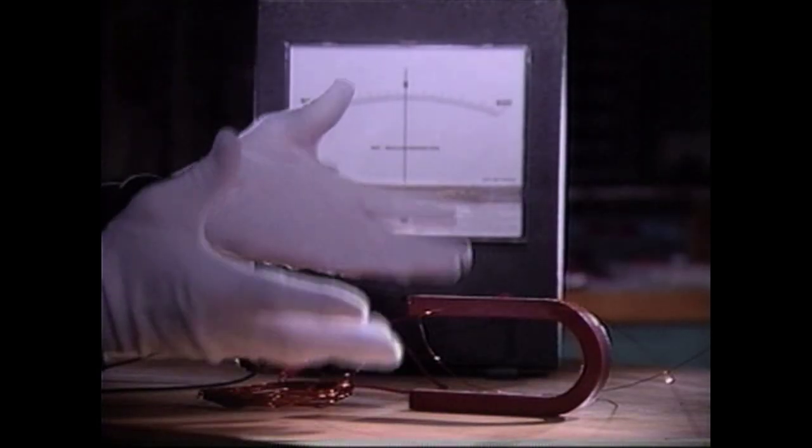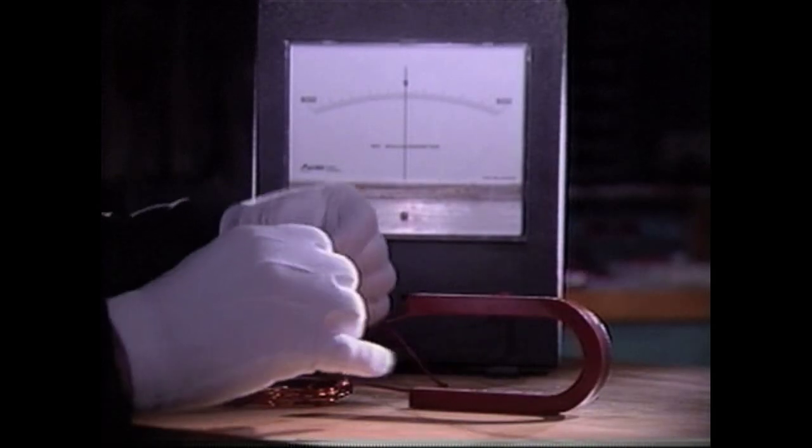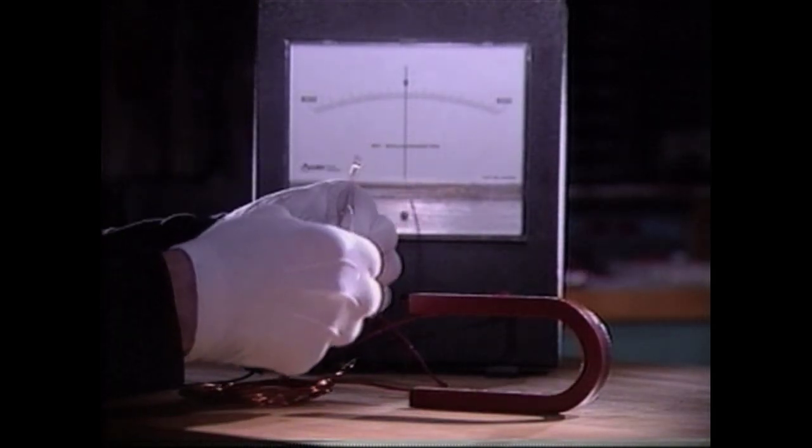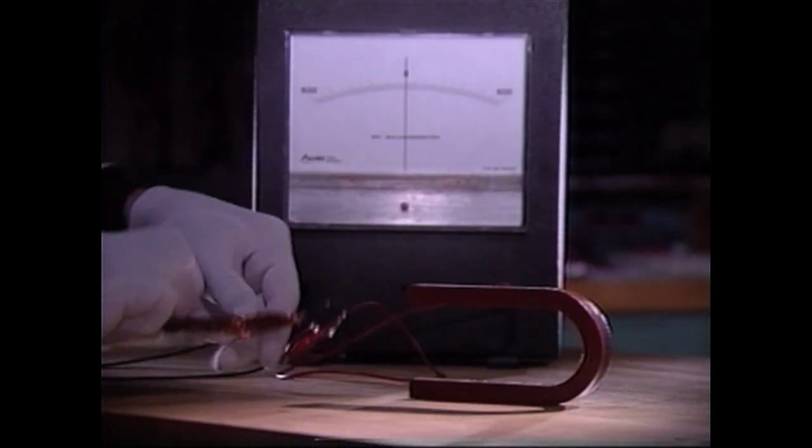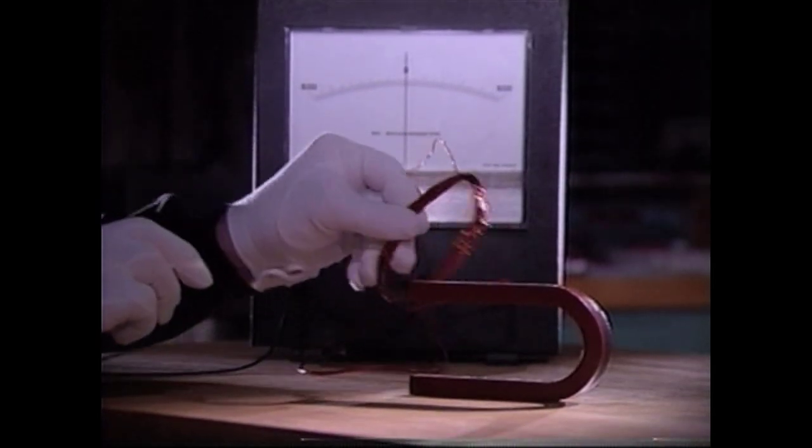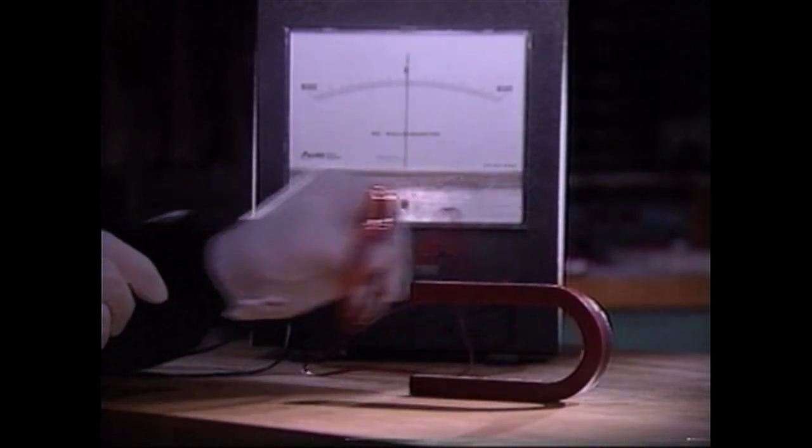Now we must figure out how to generate a strong enough voltage to be of any practical value. One way is to increase the length of that part of the conductor in the magnetic field. We can do this by constructing coils of wire.